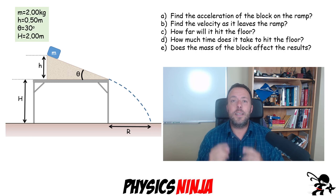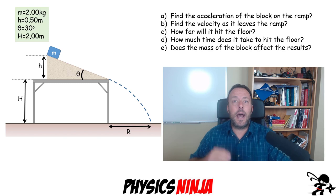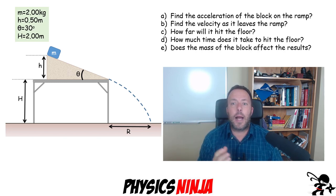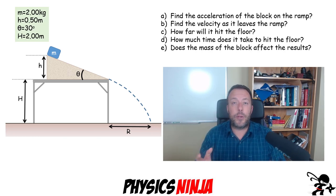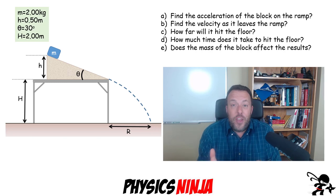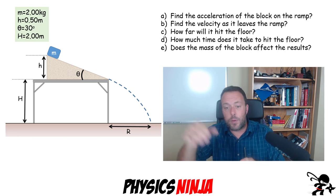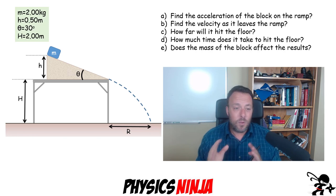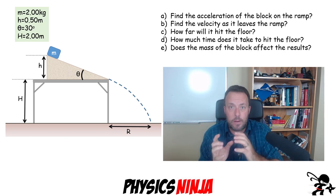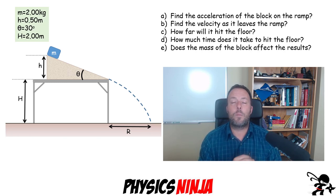The first question: what is the acceleration of the block on the ramp? Number 2: how do I find the velocity as it just leaves the ramp? Number 3: how far will it hit the floor — what is this value R? My fourth one is how much time does it take to do this whole thing: the time to slide down the ramp plus the time to fly off and hit the floor. And the last question is: does the mass of the block affect any of these results from the first four problems?